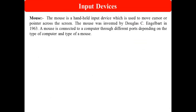The second frequently used input device is the mouse. The mouse is a handheld input device used to move the cursor or pointer across the screen. The mouse was invented by Douglas C. Engelbart in 1963. A mouse is connected to a computer through different ports depending on the type of computer — you can use two types of ports: PS/2 ports and USB ports.